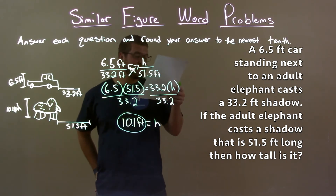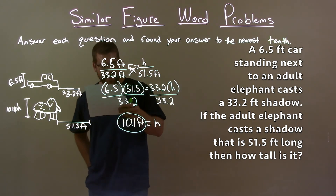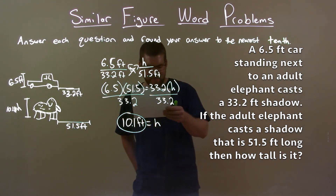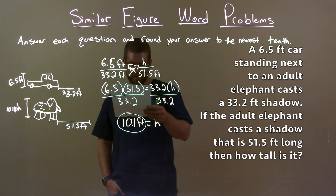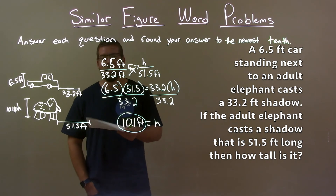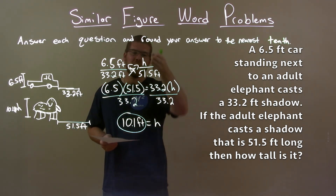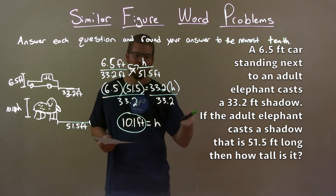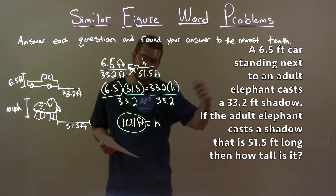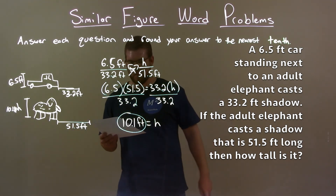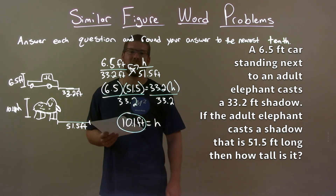Quick recap: we were given a 6.5-foot tall car casting a 33.2-foot shadow, and an adult elephant casting a 51.5-foot shadow. We created a proportion with our missing variable, solved for that variable, and got our final answer of 10.1 feet for the height of the adult elephant.